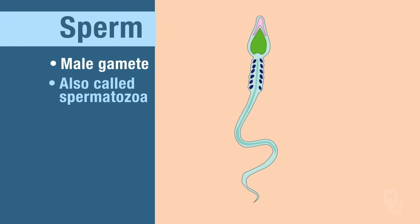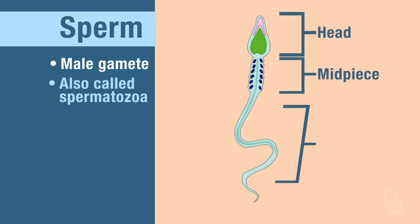Let's look at the morphology and what some of the important structures are associated with the sperm. There are three different regions: the head, the midpiece, and the tail.